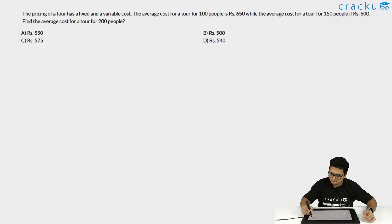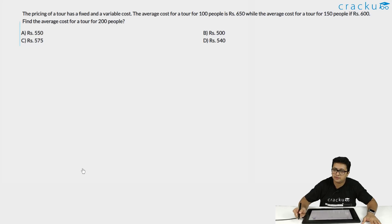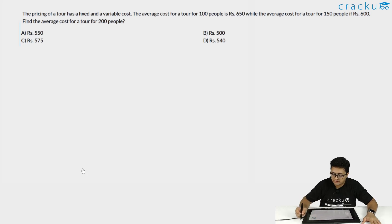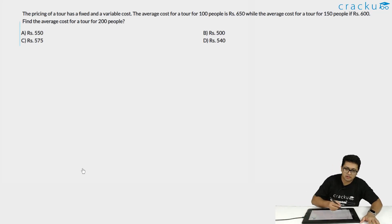Let's go to the next question. The pricing of a tour has a fixed and a variable cost. The average cost for 100 people is 650 rupees, meaning the total cost is 65,000. The average cost for 150 people is 600 rupees, meaning the total cost is 90,000. We need to find the average cost for a tour of 200 people. We can do this by finding the total cost for 200 people and averaging it. Let's write the equations.